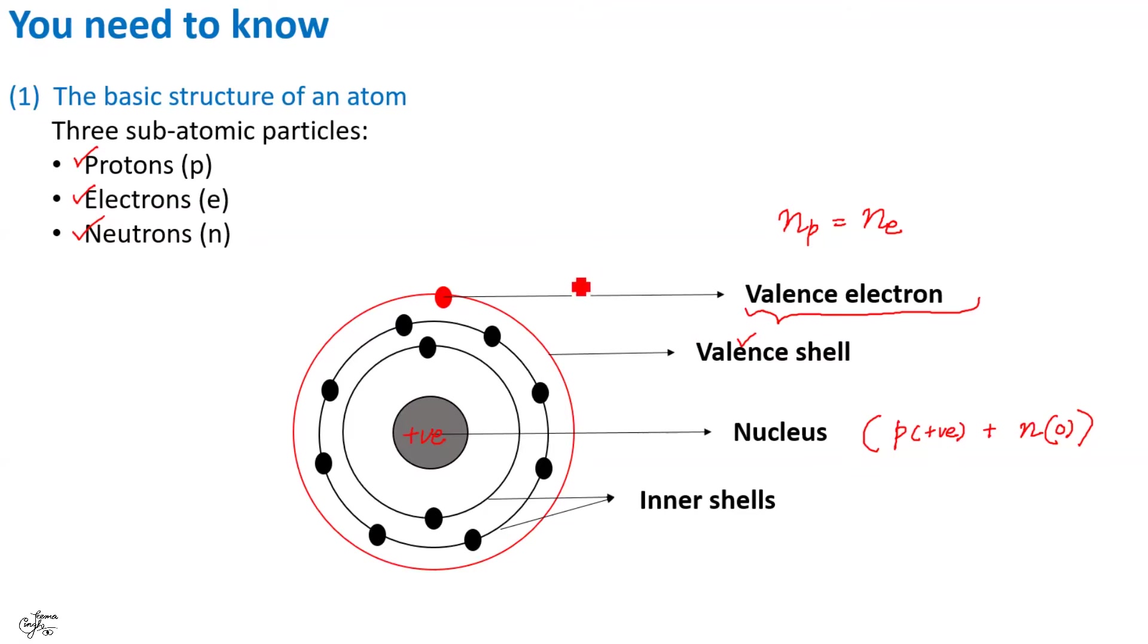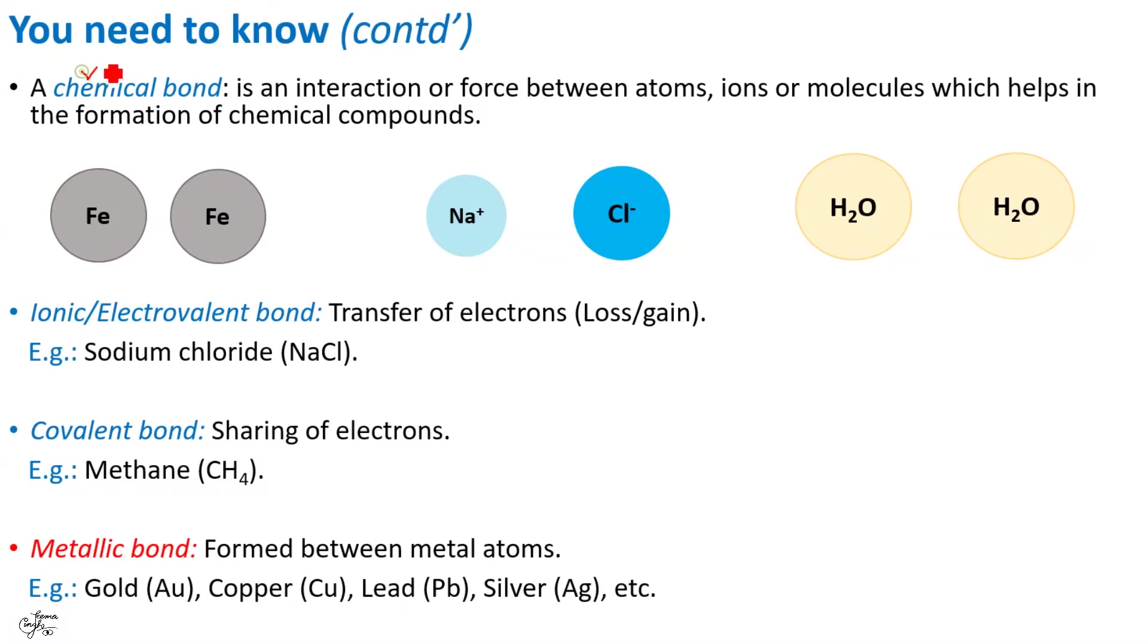The next thing you need to know is what is a chemical bond? A bond means an interaction or force or attraction that holds two or more chemical species like atoms, ions or molecules together. For example, you can have a bond between two atoms, or between two ions, or between two molecules.